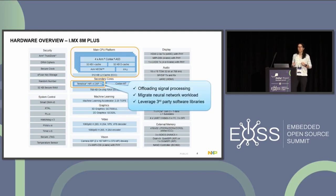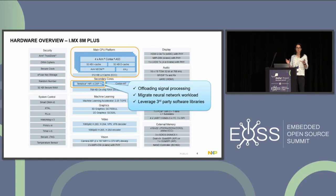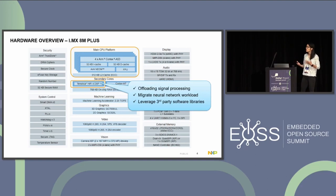We want to leverage the power processing from the HiFi 4 DSP. We can use it not just for audio and video processing, but also we can migrate neural network workloads because it has support for TensorFlow Lite — a framework that runs machine learning models with just a few kilobytes of memory. We can also enable optimized and easy-to-integrate third-party software libraries for voice communication, audio processing, neural network functions, codecs, and so on.